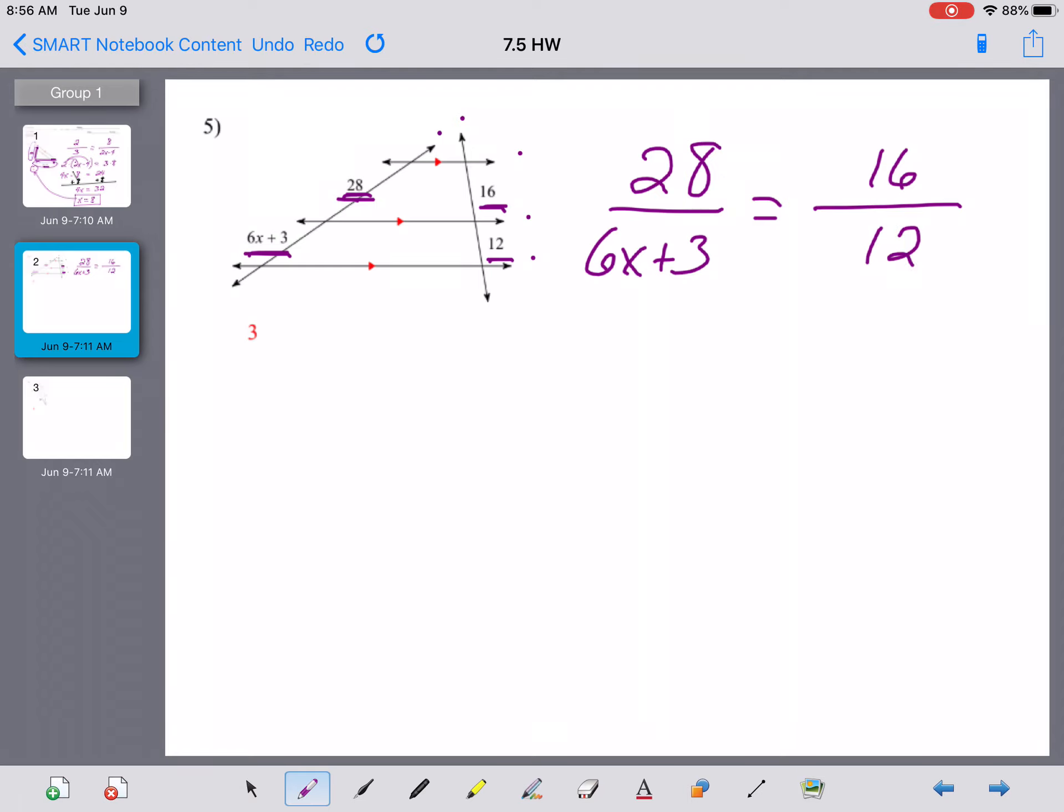Now as I've said a few times before, in a problem like this there are eight different ways that you could set up your proportion correctly. So if you tried a problem like this and your proportion looked a little bit different from mine, that's probably okay. The important thing is that the 28 and the 12 are in opposite kitty corner positions, and likewise with the 6x plus 3 and the 16.